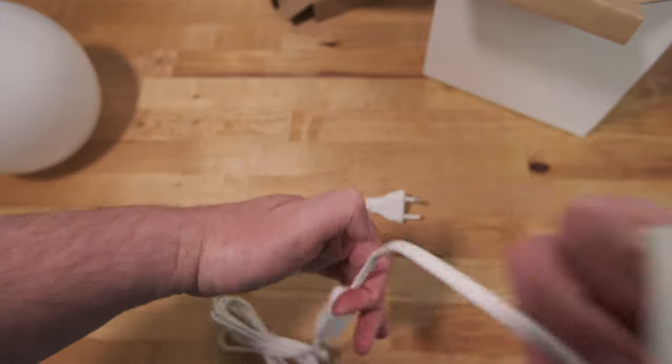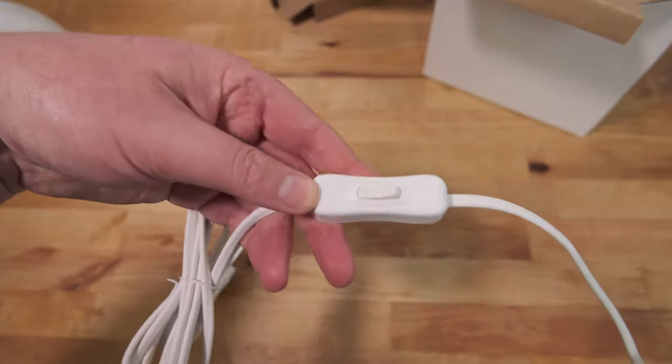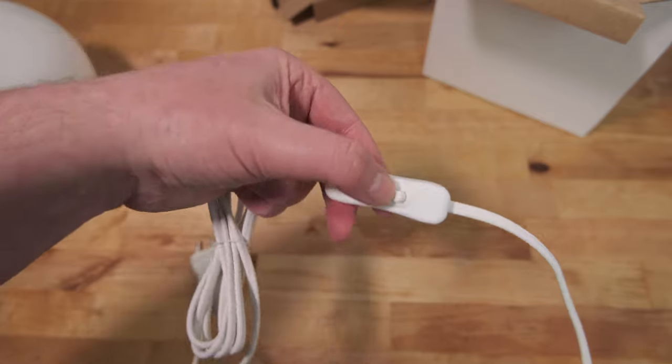The mains cable is around 6 feet long and has a handy inline on off switch around 12 inches from the lamp.